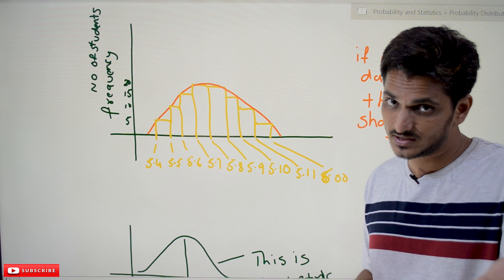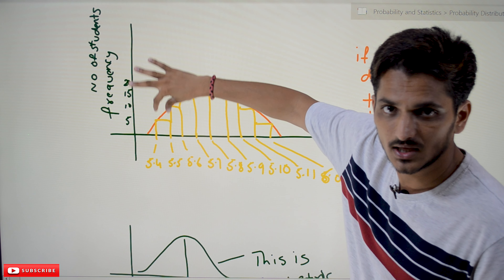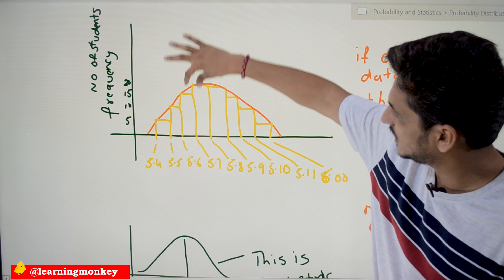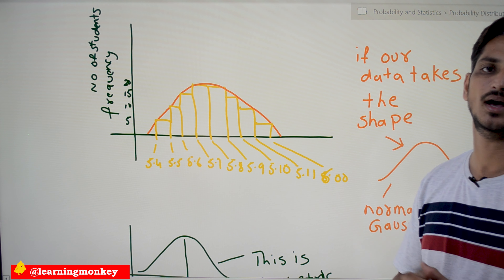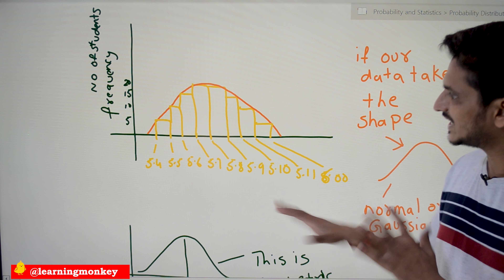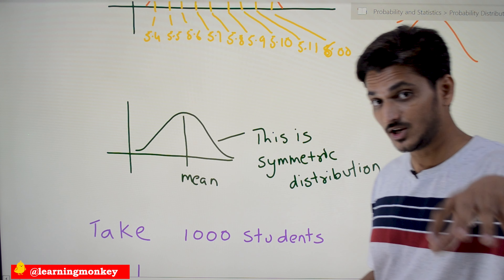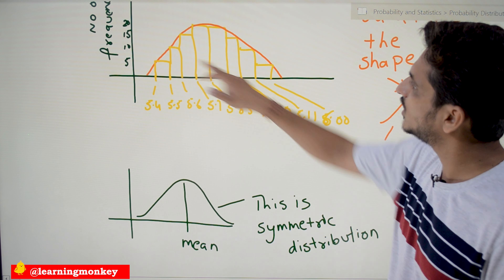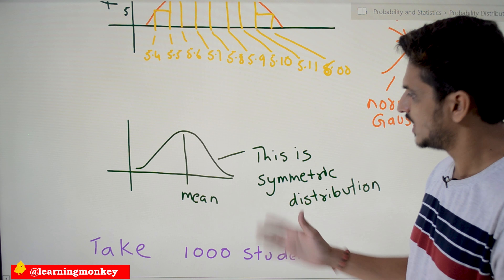So now, combining the previous class and this class, you should have some idea. The probabilities are distributed under this function — the area under the curve gives the probability values. If our data takes this shape — the bell shape — then we can apply normal or Gaussian distribution. Also, from our probability classes, we discussed symmetric and asymmetric distributions. This normal distribution is a symmetric distribution: both sides have exactly the same shape, and the mean value comes at the center.